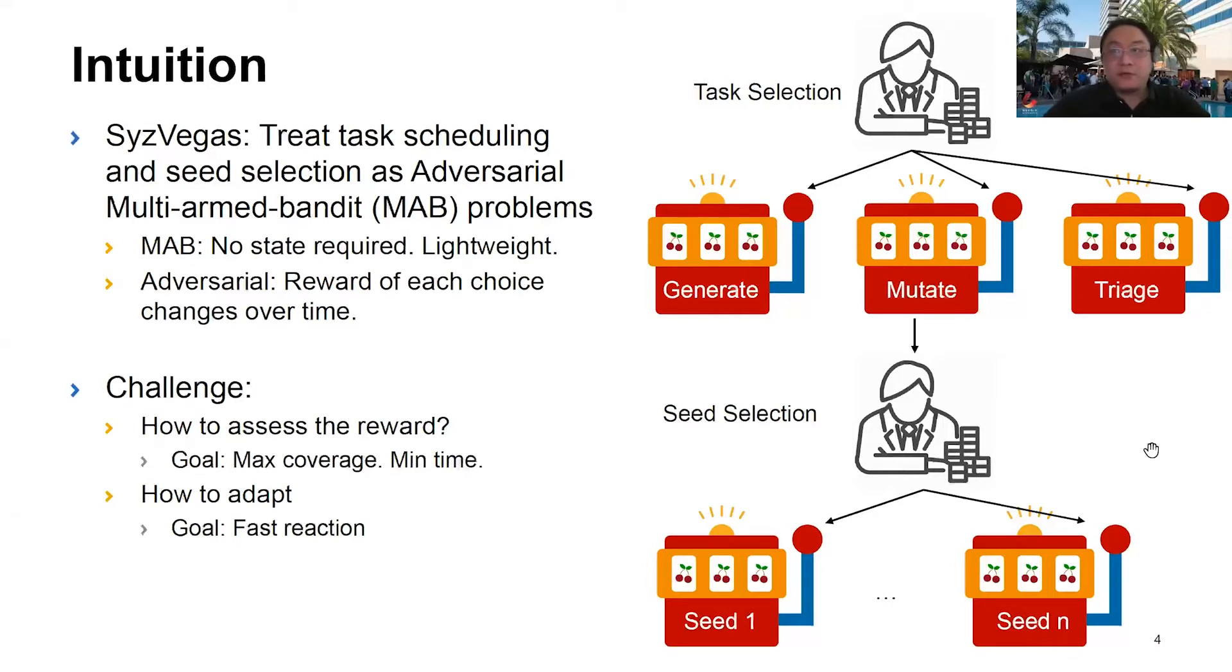In the adversarial MAB scenario, the reward of the slot machines can change over time. So the gambler, aka Syzkaller, needs to adapt to these changes. We believe adversarial MAB is a great fit for the problem. It's lightweight, doesn't care about internal states, and can adapt to the changing rewards, making it perfect to optimize coverage reached per unit time.